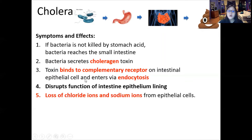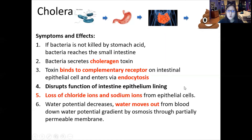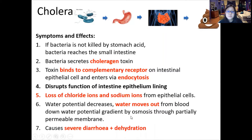The toxin disrupts the function of the intestinal epithelial lining, causing loss of chloride ions and sodium ions — essentially salt — from the epithelial cells. This salt ends up in your intestinal lumen, creating a very low water potential, and therefore water moves out from the blood and surrounding tissue down the water potential gradient by osmosis through the partially permeable membranes. This causes severe diarrhea and dehydration, and if not treated soon enough, the person will die of dehydration.